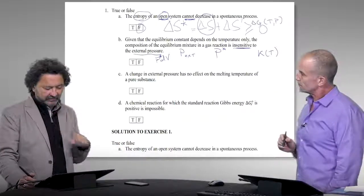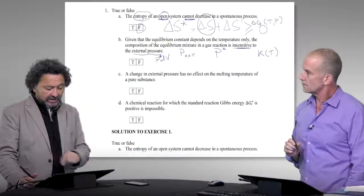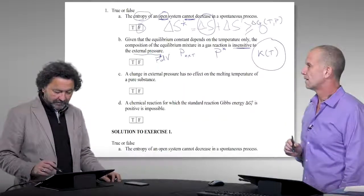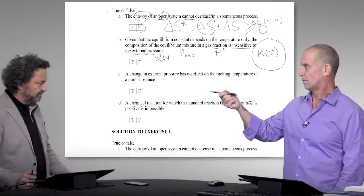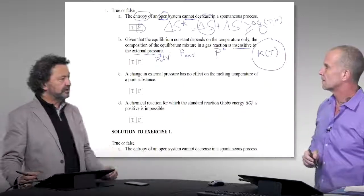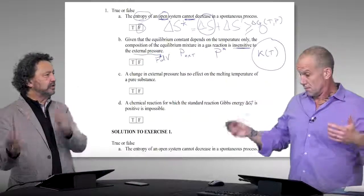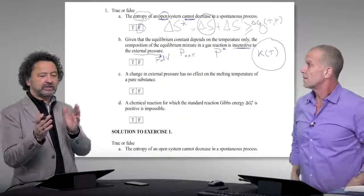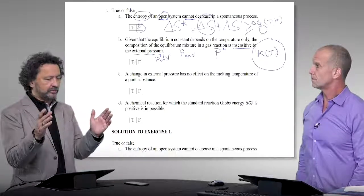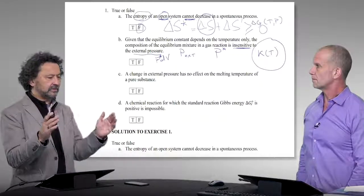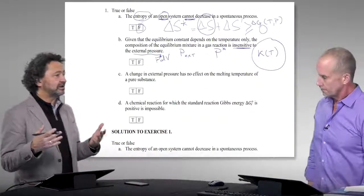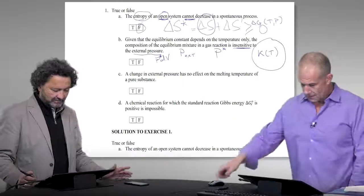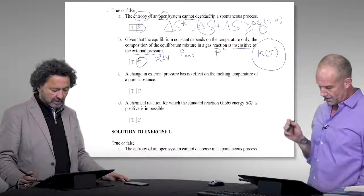The equilibrium constant depends on temperature only, but the position of equilibrium — the composition — depends on pressure too. When you increase or decrease the total pressure, equilibrium displaces to the right or to the left to compensate, in such a way that the value of K stays the same. That's Le Chatelier's principle.